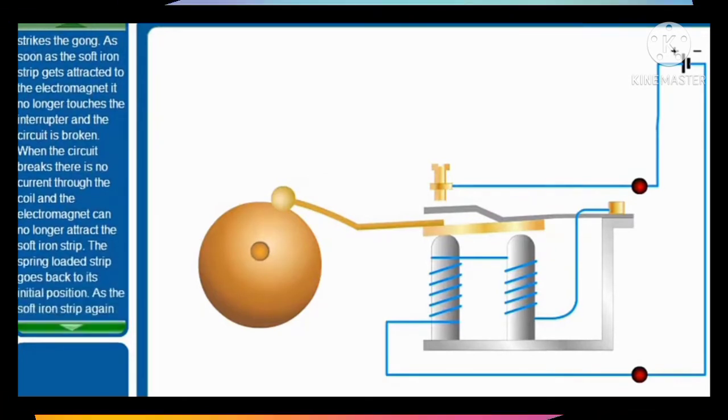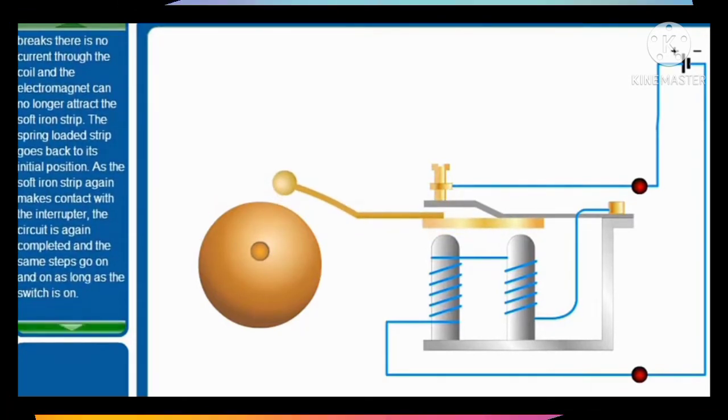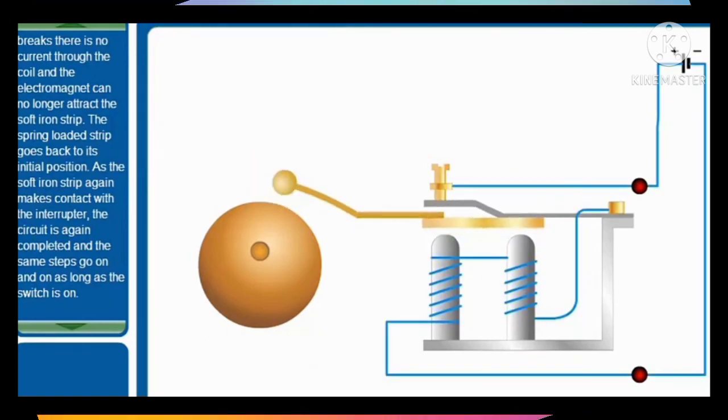The spring loaded strip goes back to its initial position. As the soft iron strip makes contact with the interrupter again, the circuit is completed and the same steps go on and on as long as the switch is on.